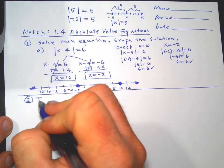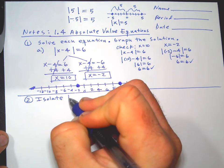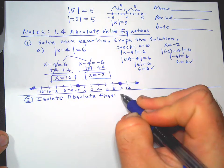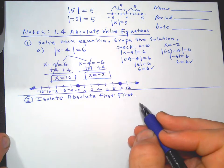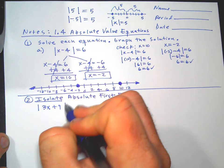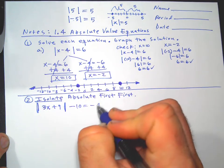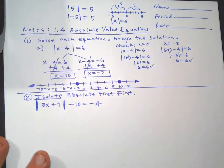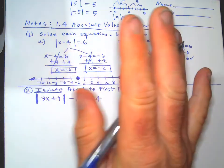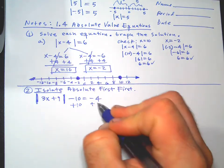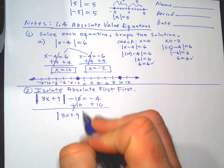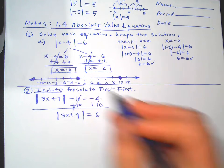Let's make it a little more complicated. On these ones, you're going to have to isolate the absolute value first — that's an extra step of work at the beginning. So here: absolute value of 3x plus 9 minus 10 equals negative 4. We can't start by splitting into two cases yet. We have to get the absolute value by itself first. Anything outside the absolute value, you've got to take care of first, so we take care of the minus 10.